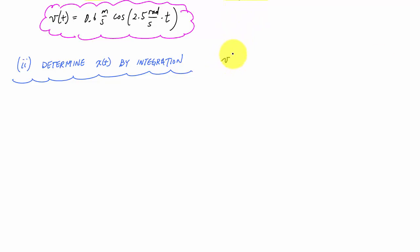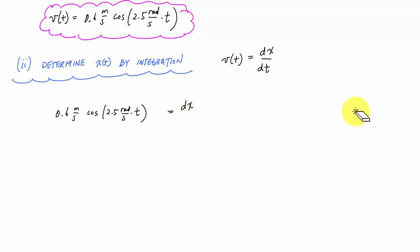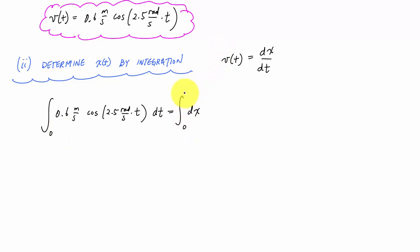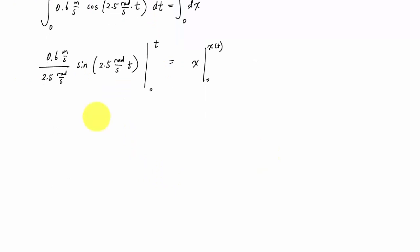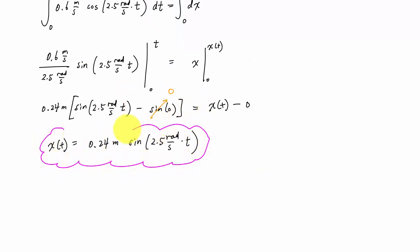Now that I have velocity as a function of time, I use the definition of velocity v = dx/dt to determine position as a function of time. Substituting the velocity function, I group variables and multiply both sides by dt to set up the position integral. Bounds on the left go from x₀ = 0 to x(t), and on the right from 0 to t. After integrating, this gives the position as a function of time: x(t) = 0.24 sin(2.5t) meters.